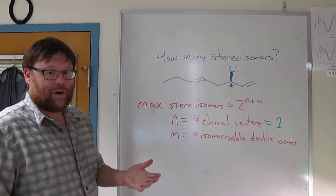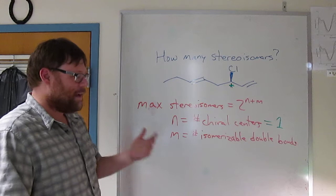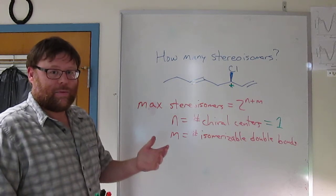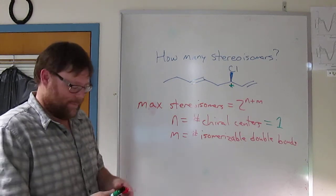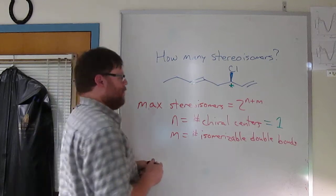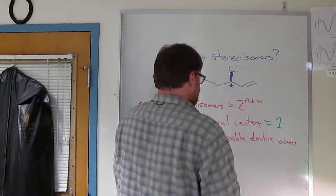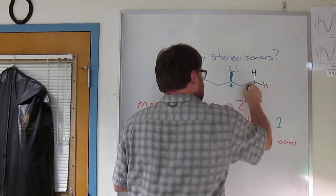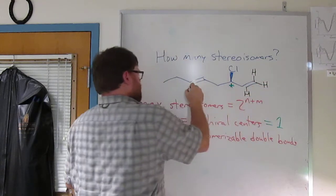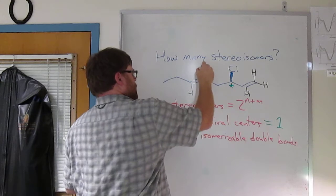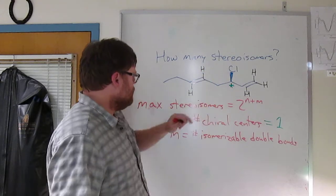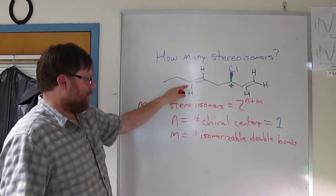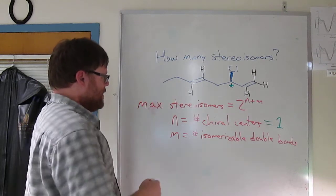Okay, so now what about this isomerizable double bond stuff? An isomerizable double bond is a double bond that can be cis or trans. So let's fill in the rest of the groups here on the double bonds. Put the H's there.